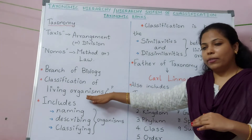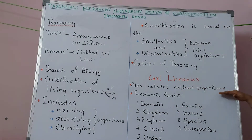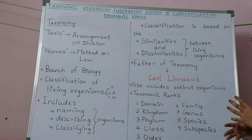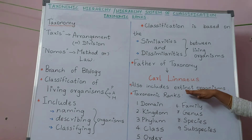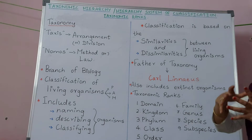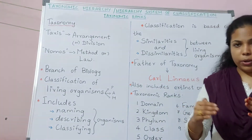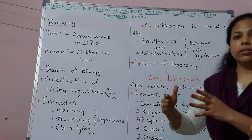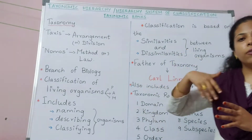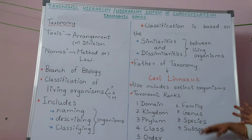One important point in taxonomy is that we are not just classifying living organisms — we are also classifying extinct organisms. We can find information about all animals that are extinct at present. Extinct organisms are organisms that are not alive at present but lived on the earth some years back.